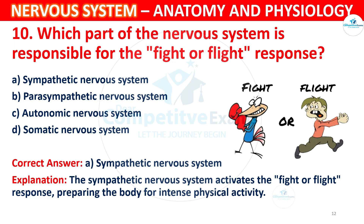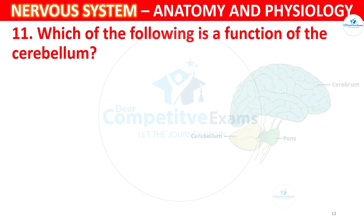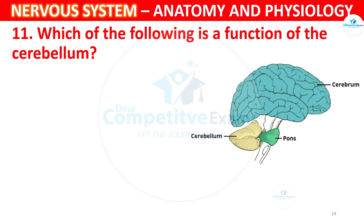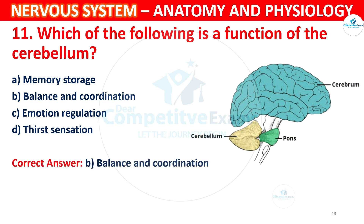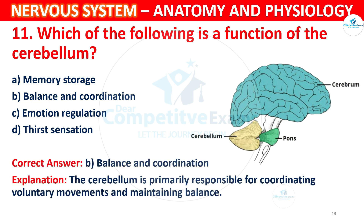Question 11: Which of the following is the function of the cerebellum? Options: A) Memory storage, B) Balance and coordination, C) Emotion regulation, D) Thirst sensation. The correct answer is B, Balance and coordination. The cerebellum is primarily responsible for coordinating voluntary movements and maintaining balance.